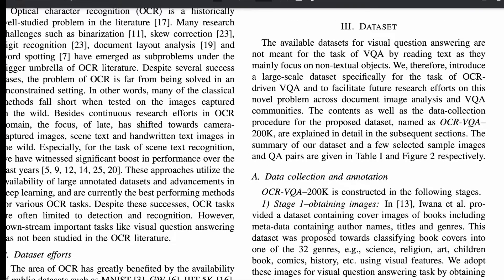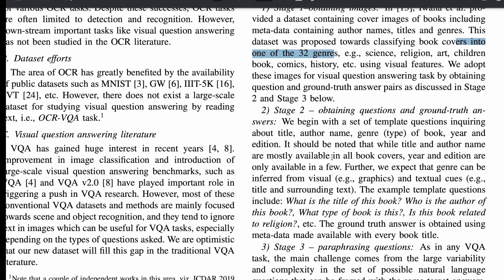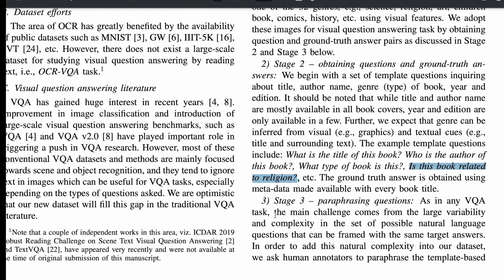They propose a dataset called OCRVQA-200K with roughly 200,000 images. The first stage is obtaining images — book covers across 32 genres. They then define template-based questions around title, author, year, genre, and similar attributes. To scale the dataset, they apply paraphrasing, which rewrites the same content in a way that preserves semantic meaning while changing syntax — parsing input through a model M.